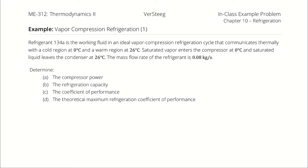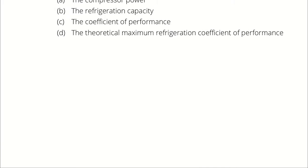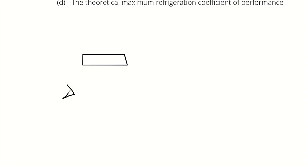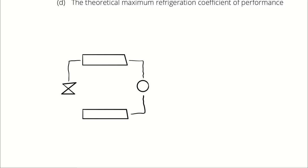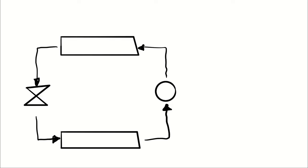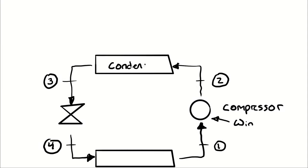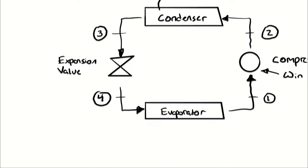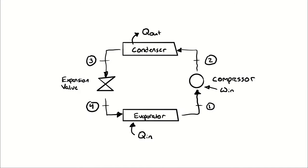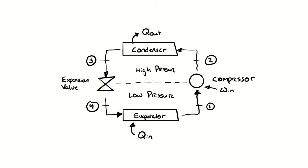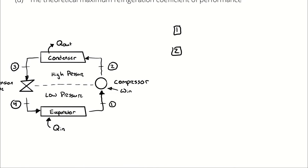To start, I'll draw a rough diagram and identify some state points. Using the model of simple vapor compression refrigeration, there are four processes occurring between four state points: isentropic compression from one to two, isobaric heat rejection from two to three, isenthalpic expansion from three to four, and isobaric heat absorption from four to one. Since two-to-three and four-to-one are isobaric, I'll denote the high and low pressure sides.